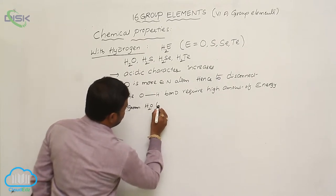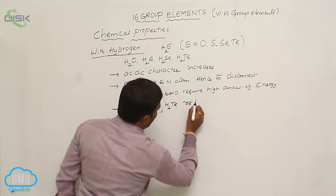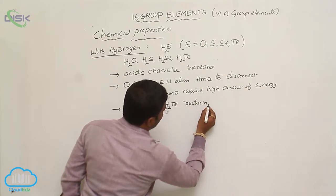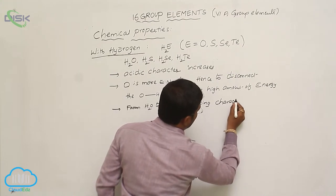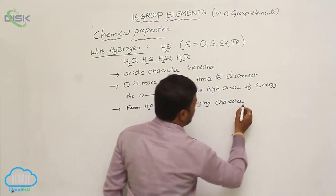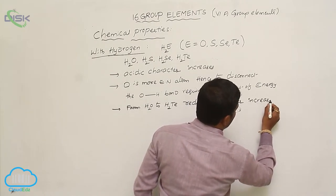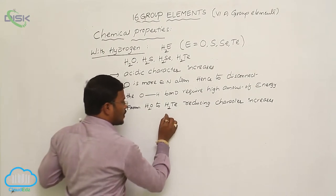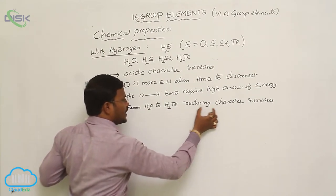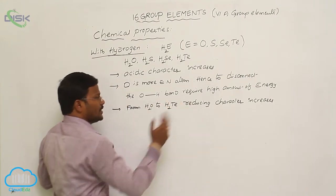Water molecule to hydrogen telluride, reducing character increases. Reducing character of these molecules increases means hydrogen tellurides may work as reducing agent, whereas water molecule never works as reducing agent.